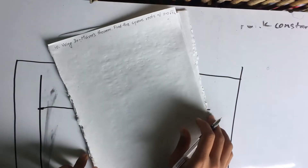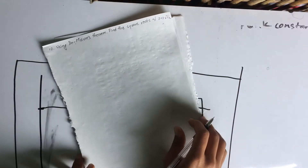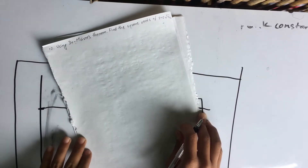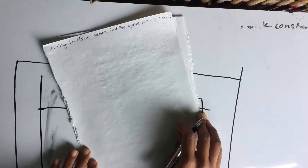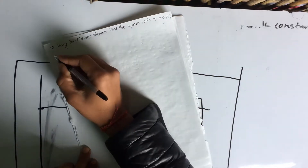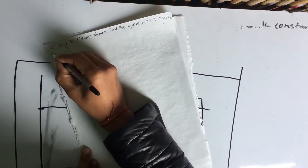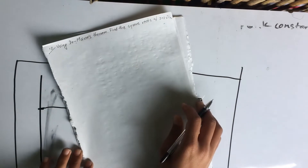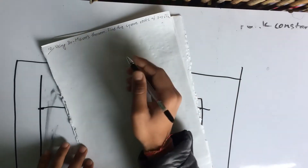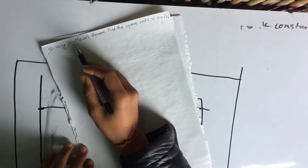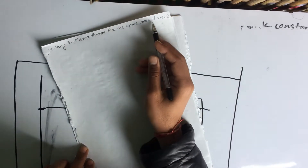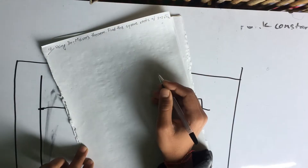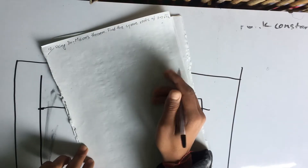Hello! I am going to present the first question. Using De Moivre's theorem, find the square root of 2 plus 2 root 3 i.